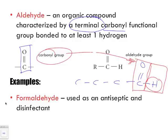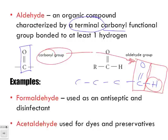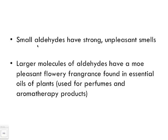Let's look at a few examples. Formaldehyde is used as an antiseptic and a disinfectant, and also used as a preservative when dissecting animals in biology. Acetaldehyde is used for dyes and other types of preservatives. Small carbon chain aldehydes have a strong unpleasant smell — hence something like formaldehyde has a very strong smell in the lab.